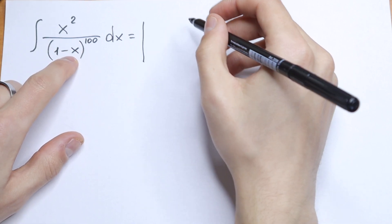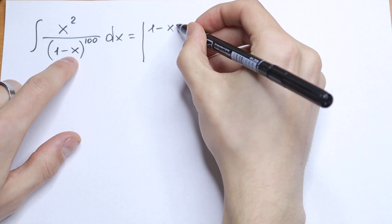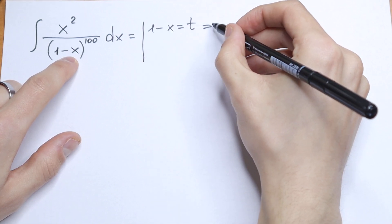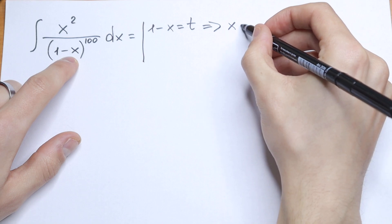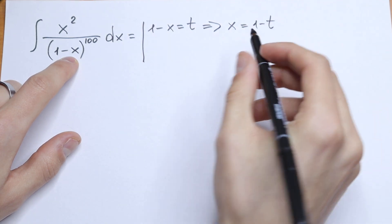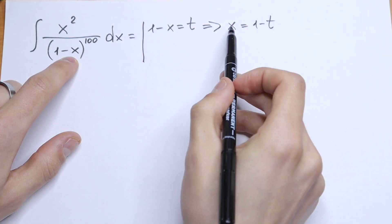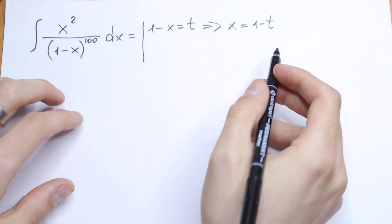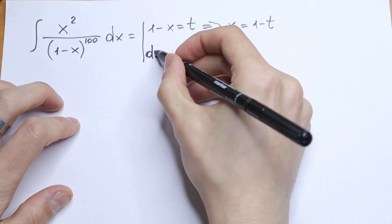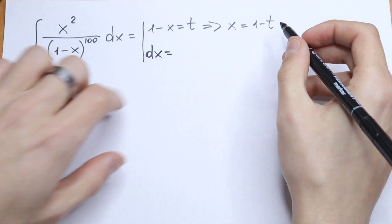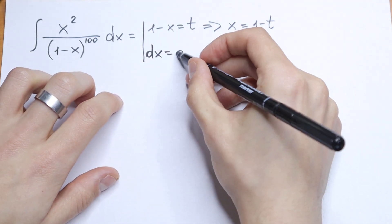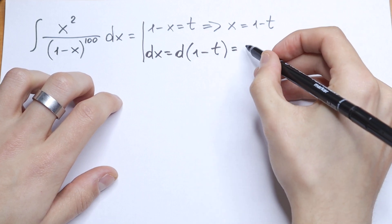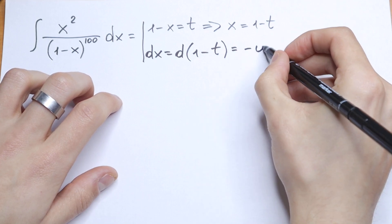So 1 minus x will be our t. So 1 minus x equals t, and from here x equals 1 minus t. This is our x. And let's find our dx: dx will be equal to the derivative of 1 minus t, which is equal to minus dt.